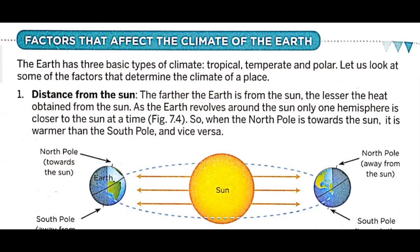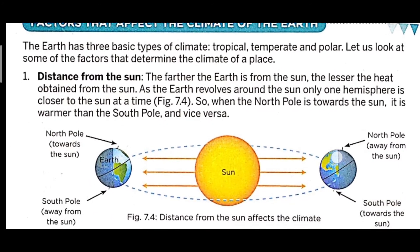As the earth revolves around the sun, only one hemisphere is closer to the sun at a time. So when the North Pole is towards the sun, it is warmer than the South Pole.